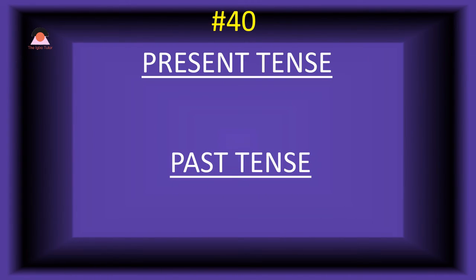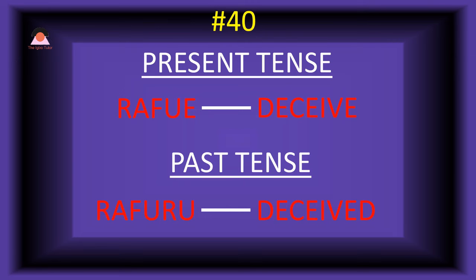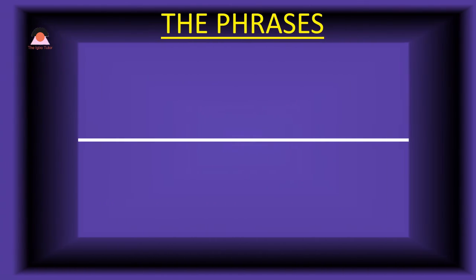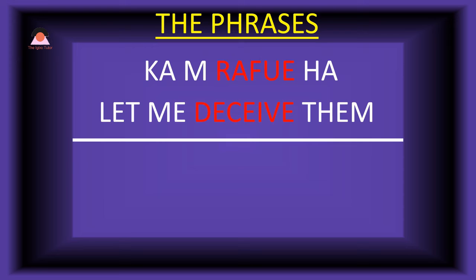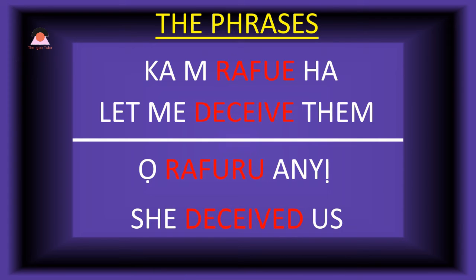Word number forty: 'rafue,' meaning 'deceive.' The past tense of rafue is 'rafuru,' meaning 'deceived.' Present tense phrase: 'kam rafue-ha' — let me deceive them. Past tense: 'o-rafuru-ani' — she deceived us.